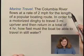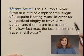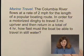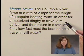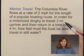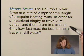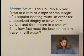We're going to be looking at a motion problem. We're told that the Columbia River flows at a rate of two miles an hour for the length of a popular boating route. In order for a motorized dinghy to travel three miles upriver and then return in a total of four hours, how fast must the boat be able to travel in still water?